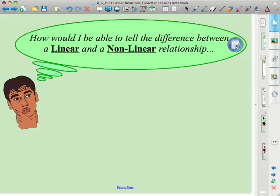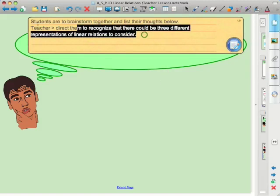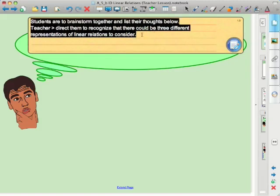Now, just to note, you'll notice this little button here. What I like to do is refresh my memory as to the purpose of my slides. So you'll notice here, I wrote a little comment that I want students to brainstorm together their thoughts. And as a teacher, I wanted to direct them to recognize that there could be three different representations of linear relations.